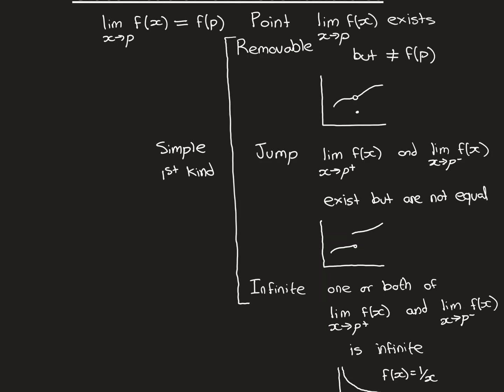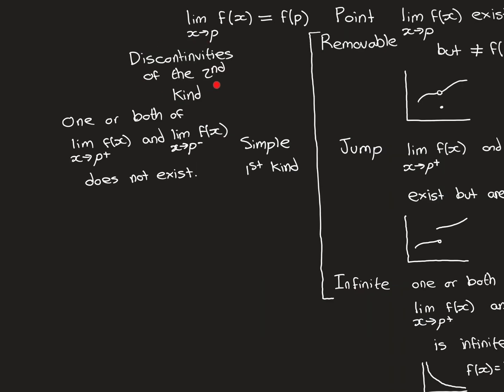This is the end of the simple types of discontinuity. We group removable, jump, and infinite discontinuities together and call them discontinuities of the first kind, or first type. The more complicated types we'll look at now are called discontinuities of the second kind. Functions with discontinuities of the second kind are generally in the realm of analysis rather than calculus.